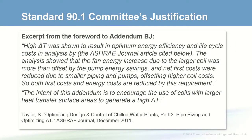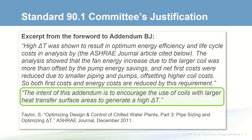It's helpful to understand the 90.1 committee's intent when a new requirement is added. Other than physically attending the committee meetings, the best way is to read the foreword included when an addendum is released for public review. The committee cites a life cycle cost analysis published in the 2011 ASHRAE Journal. Their intent was to encourage the use of coils with more heat transfer surface to achieve this higher delta T.